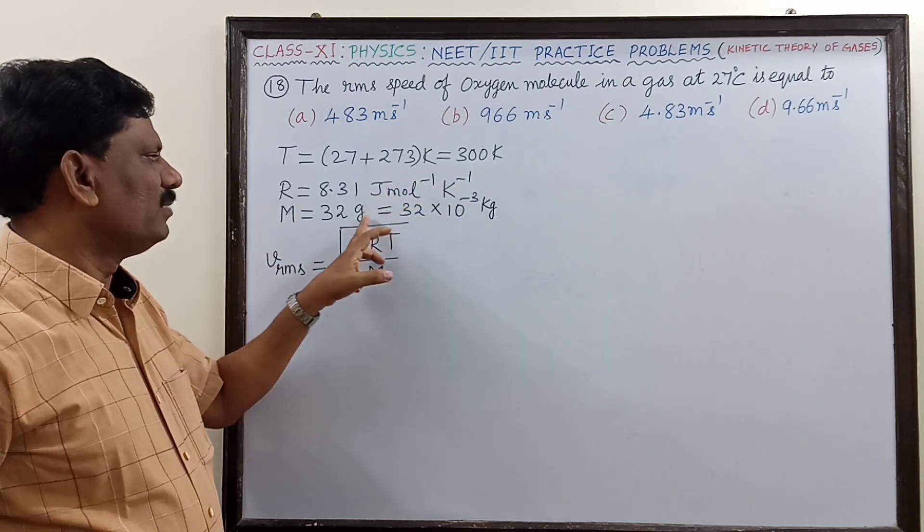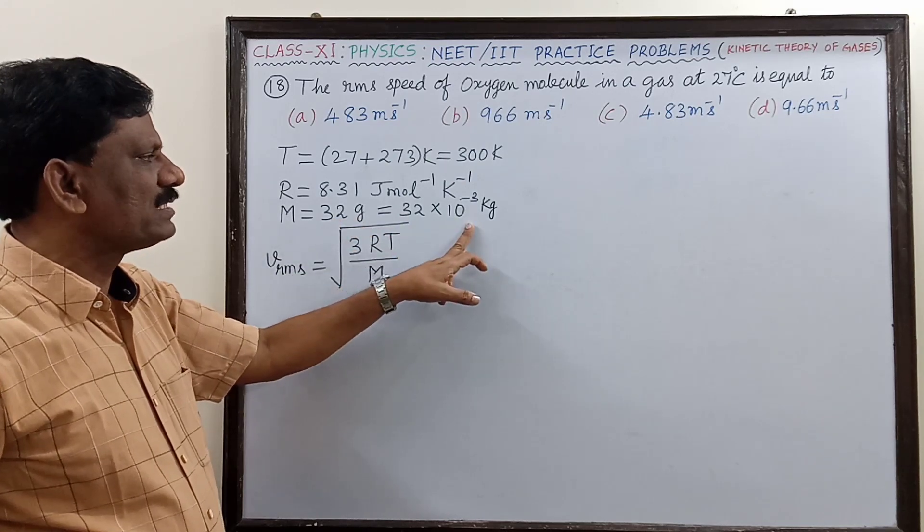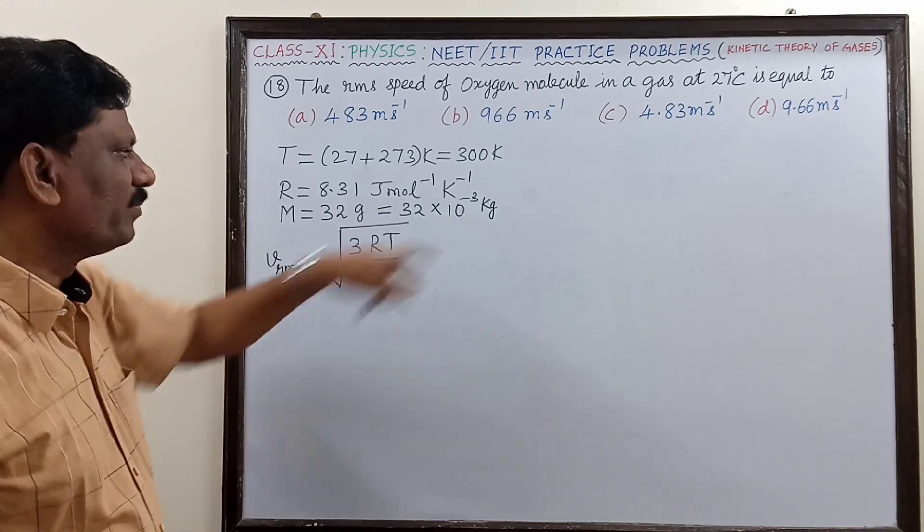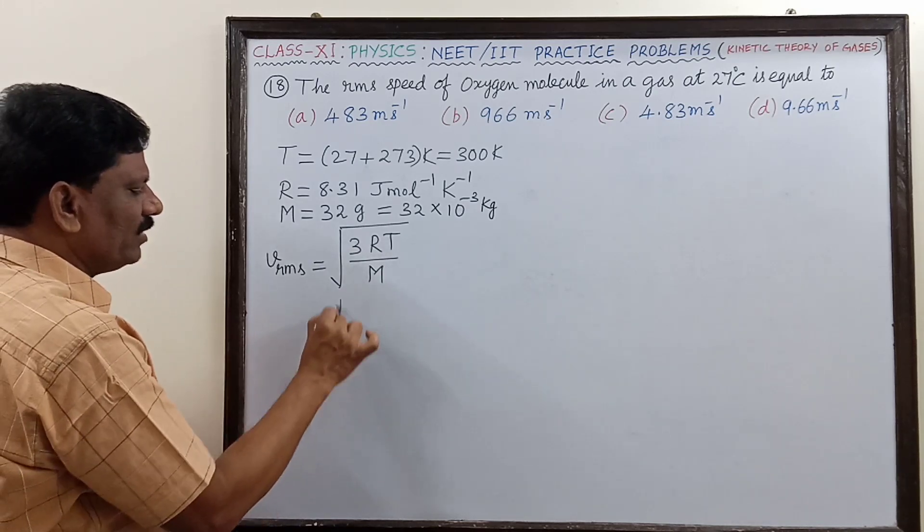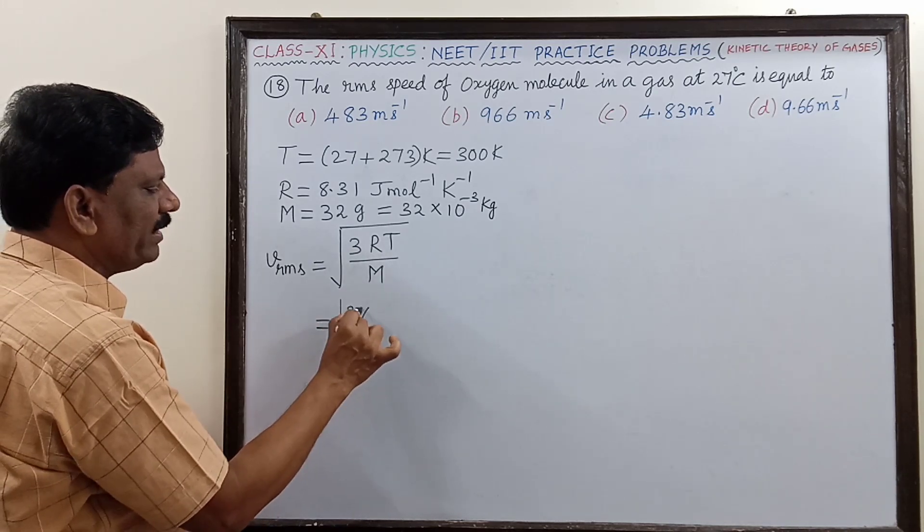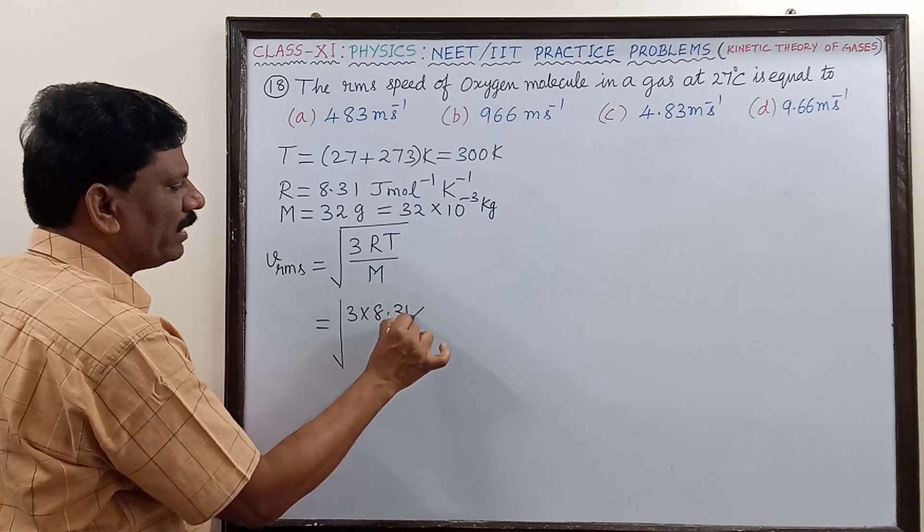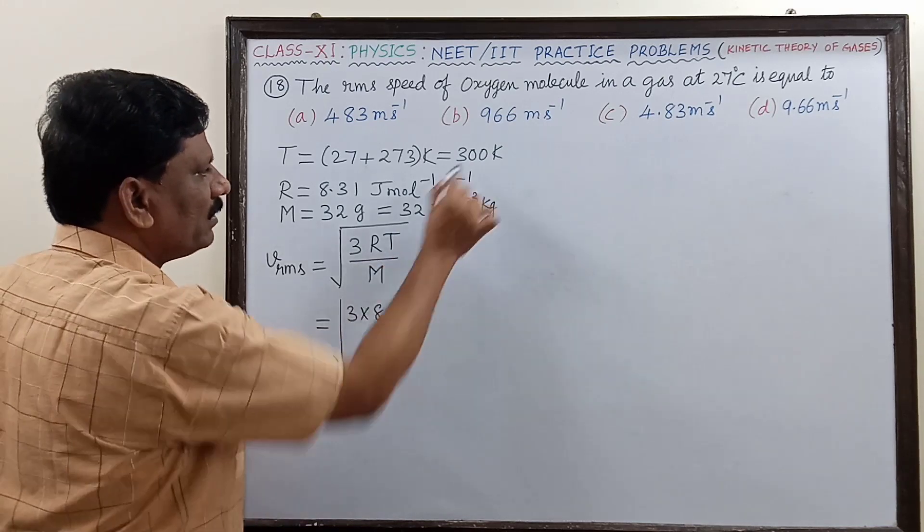All Joule, Kelvin, everything is in SI unit, so this mass also has to be expressed in kilogram. Now I am going to substitute the values in this equation. Therefore, V_RMS is equal to square root of 3 multiplied by 8.31 into 300 divided by...